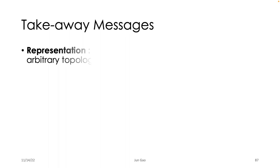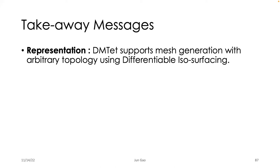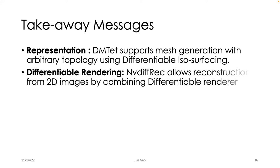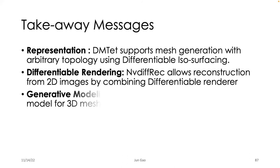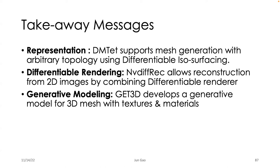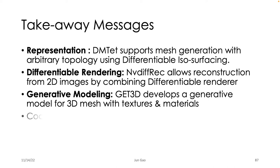In summary, today's talk covers three main contributions: first, DMTet — a representation that supports mesh generation with arbitrary topology using differentiable isosurfacing; second, NVDiffRec — which allows reconstruction of 3D shapes from 2D images by combining differentiable isosurfacing with differentiable rendering; and third, GET3D — a generative model for producing 3D textured meshes with materials. The code with pre-trained models is available on our GitHub page.